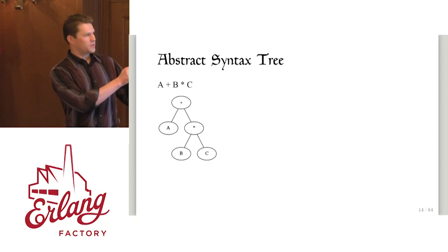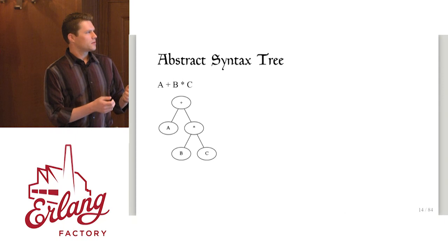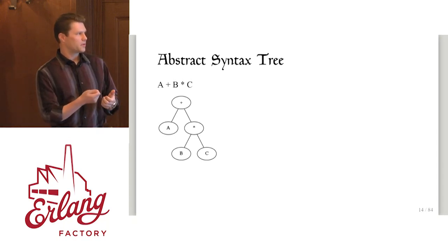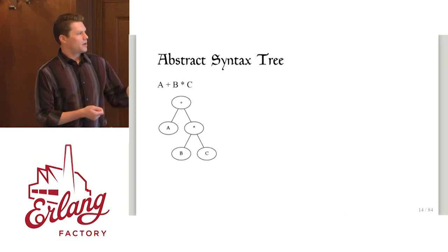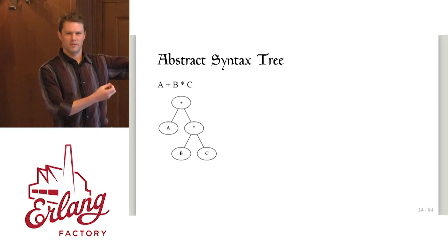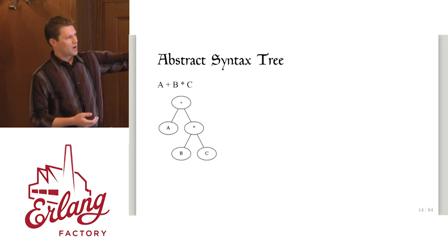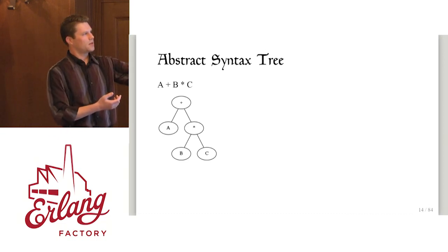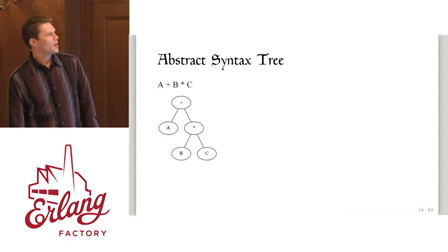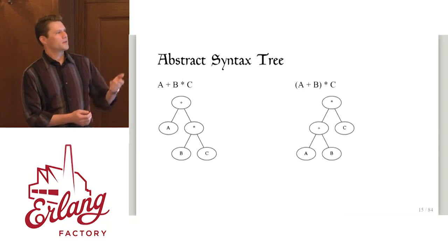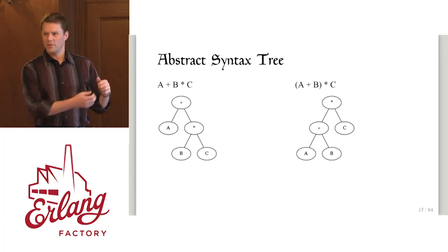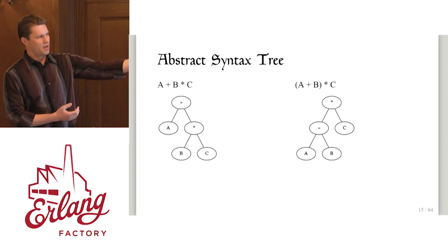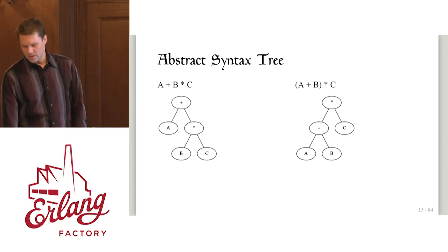Then you start to recognize a as a variable, plus as an operation, b as a variable, and so on. Even though the text was flat, the tree is now nested — I'm representing operator precedence in my tree. Multiplication has higher precedence and goes lower in the tree. When I evaluate this tree I do it bottom up: take b times c, then take the result and add it to a. If I change operator precedence by putting parentheses in, I don't put the parentheses in the tree — this is the abstract part of abstract syntax — but I do change the shape of the tree so a plus b is evaluated first and the result gets multiplied with c.